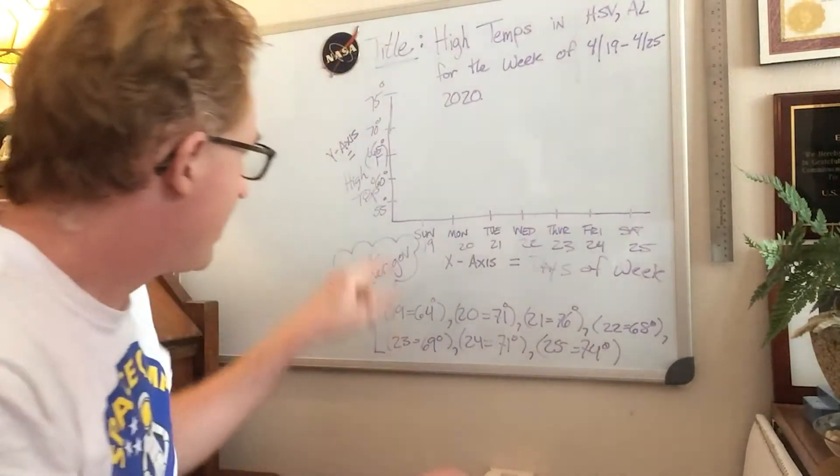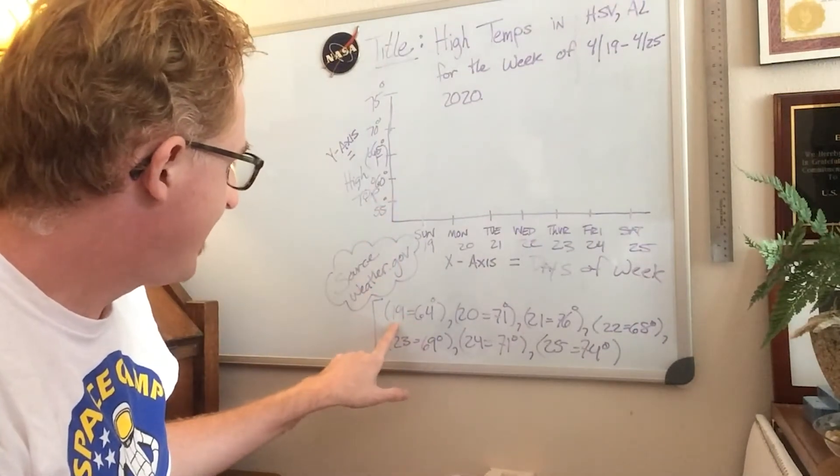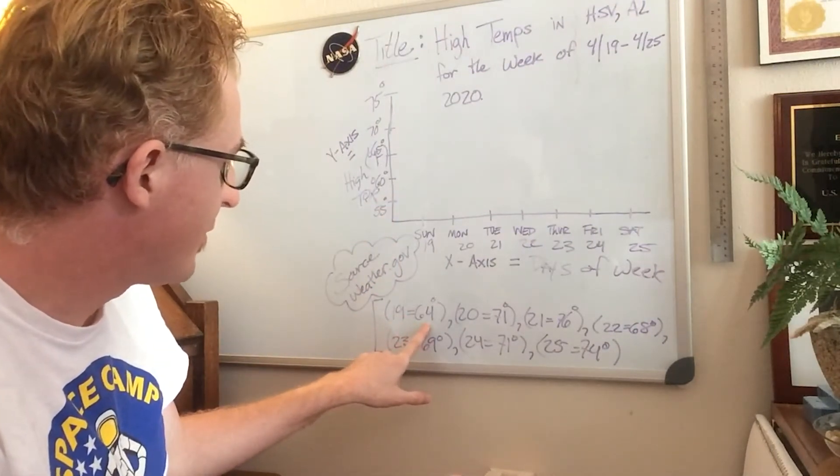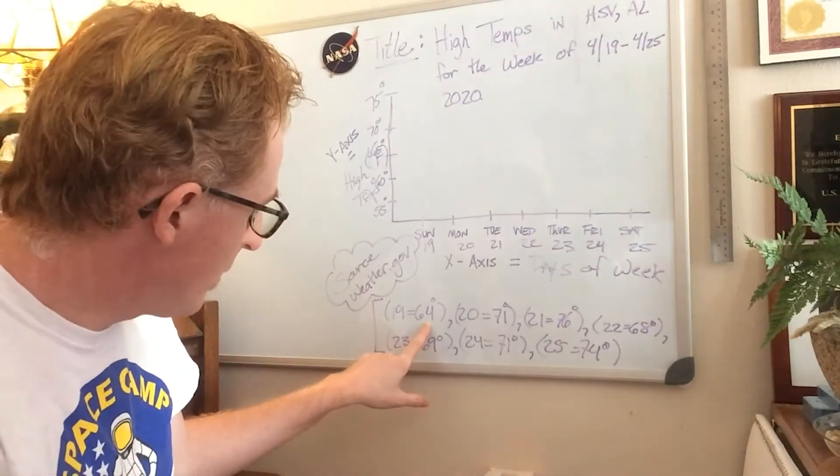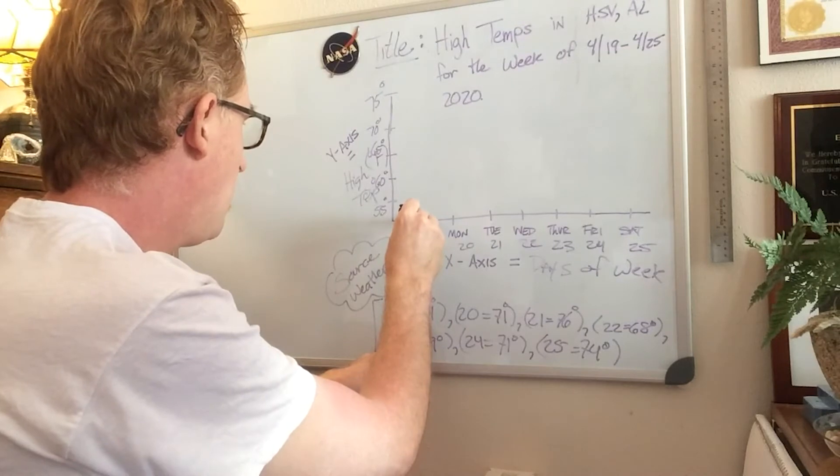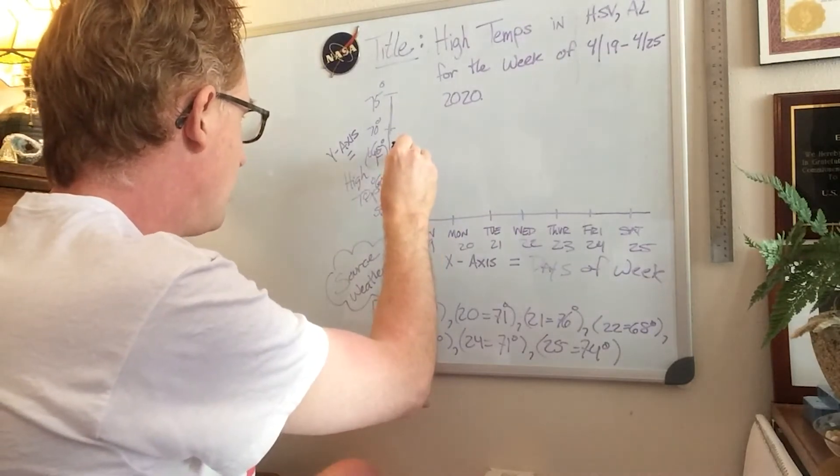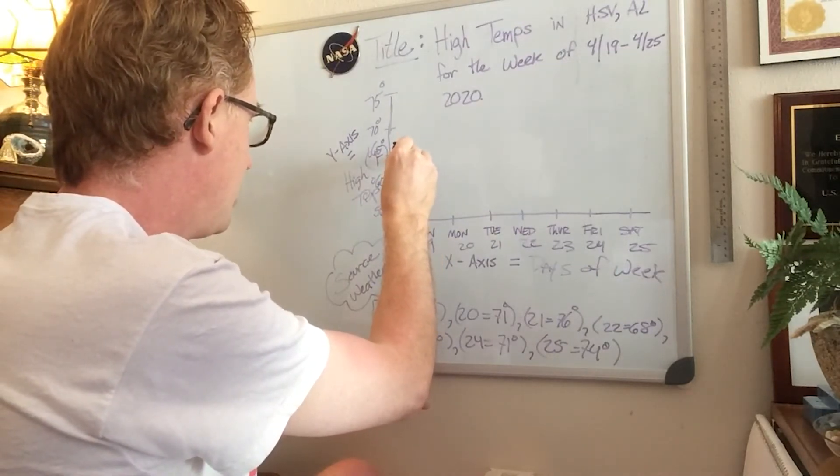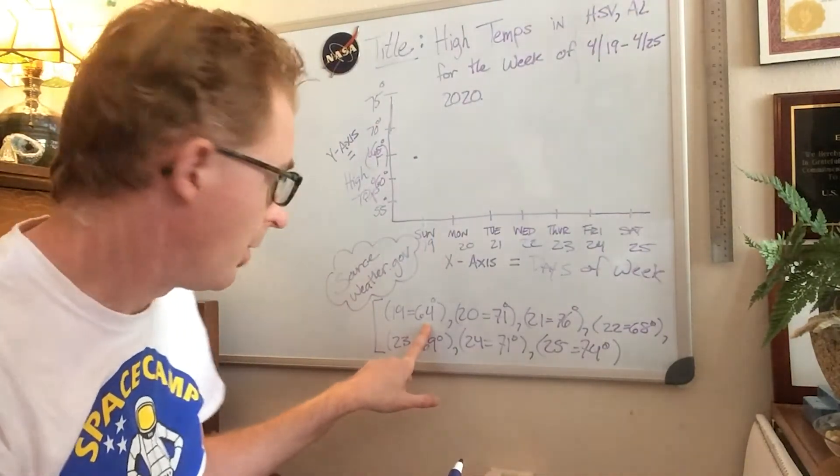So our first value set that I have here for the 19th, Sunday the 19th, I have 64 degrees. So I'm going to line up my Sunday the 19th and go up to, here's 65, so right below it I'm going to put my point right there of reference, my data point reference.